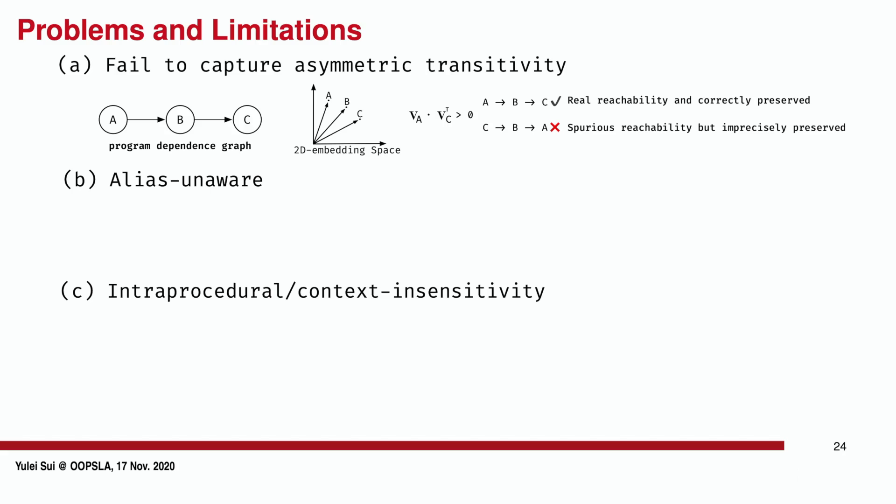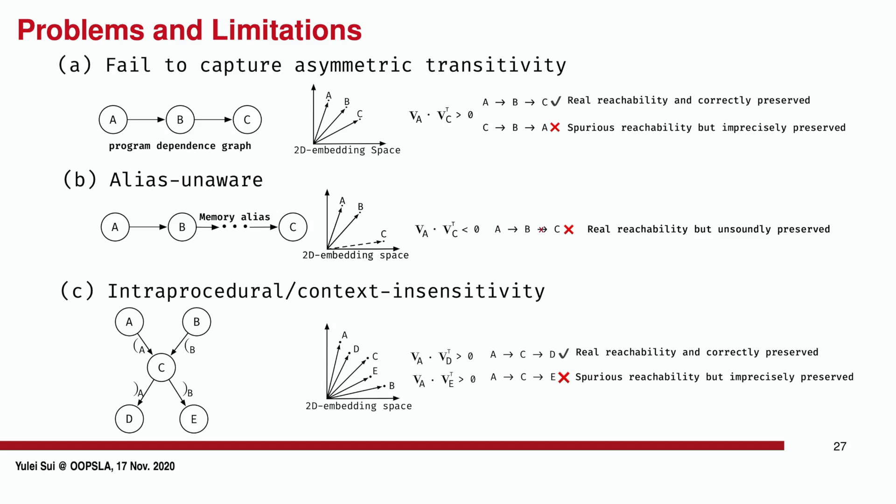Similarly, existing approaches also fail to preserve and embed imprecisely the structural information such as pointer aliases and interprocedural context sensitivity. For example, without preserving aliases, we may obtain incomplete reachability relations in the embedding space. Without considering calls and returns, the result embedding may contain spurious dependence relations.